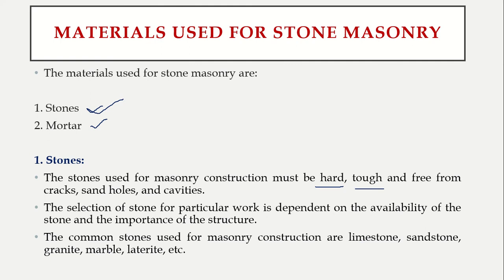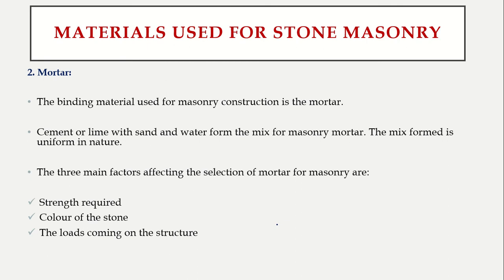The most commonly used stones for masonry are limestone, sandstone, granite, marble, etc. Moving to the second material — mortar. Mortar is the binding material, generally made up of a binder, sand, and water, mixed in a ratio of 1:3. We mostly use cement mortar; people also use lime mortar. Different kinds of mortar are already covered in our playlist.